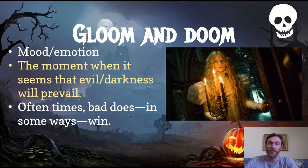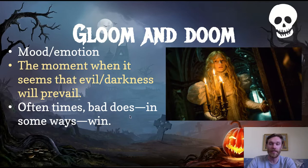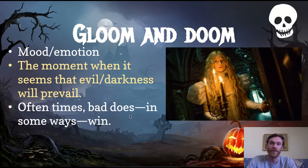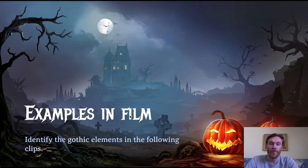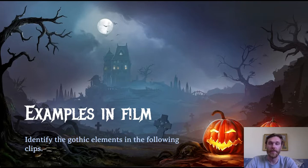The last element is gloom and doom — we're thinking about the mood of the story here. How does the story make you feel? Write down the moment when it seems that evil or darkness will prevail. What is the darkest point when it seems like evil is going to win? In gothic stories, the good guy doesn't always win, which is pretty intriguing. See if you can identify gothic elements from the film examples we looked at in class, and please let me know if you have questions.